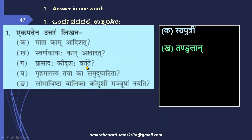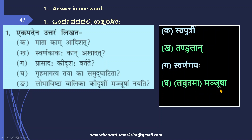Prasadaha Kidrishaha Vartate — what kind of palace was it? Prasadaha Swarnamaya — it was a golden palace. Having come home, what was opened by her? Lagutama Manjusha — the lightest box, which she got, she opened. Lobha vishta balika kidrishim Manjushaam nayati — the greedy girl brought the biggest box, Brhatttamam. These are the five answers to the five questions on this page.